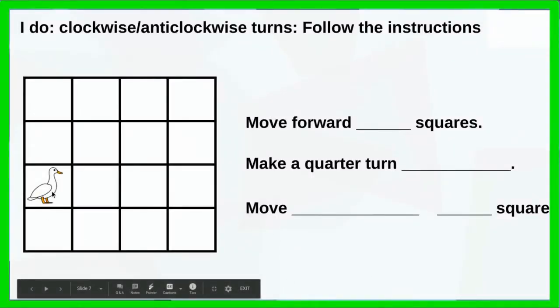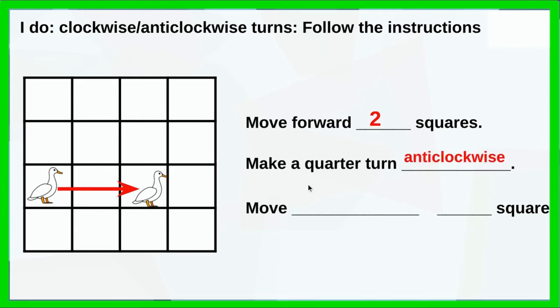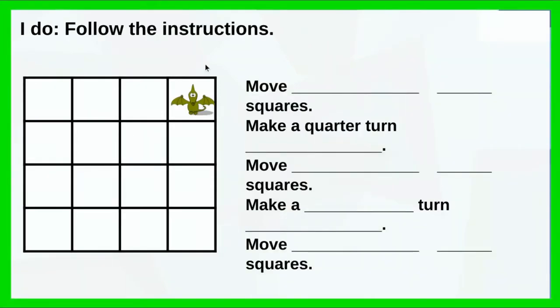Now we've recapped the language regarding turns, I'm going to model how to follow directions for a simple journey. I have my goose and I'm going to send it on a journey following some directions. First, move forward two squares: one step, two steps. Then make a quarter of a turn anti-clockwise, heading this way — upwards. Then move forward one square. The X marks where I've landed.